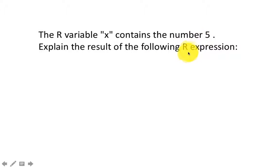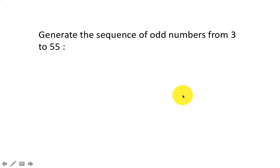The R variable x contains the number 5. Explain the result of the following R expression: x-5:10. This is what the result is. Why is the result this? Obviously, the result is this because colon has precedence. So it's going to generate the sequence 5, 6, 7, 8, 9, 10. And then it's going to subtract each of those numbers from 5. So 5-5 is 0, 5-6 is -1, 5-7 is -2, and 5-10 is -5. So again, it's all about operator precedence.